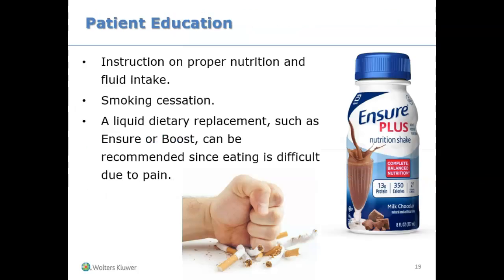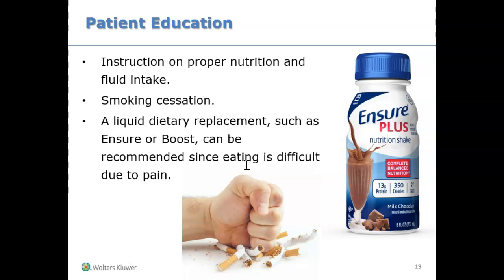If you have a client with necrotizing periodontal disease, you can refer them to a periodontist. You can also teach them to try to eat — and since it's so painful, at least take Ensure or Boost as a dietary replacement so they're still getting their nutrients, vitamins, and minerals. If they're smoking, we really need to educate them on stopping, because smoking can trigger it a lot more.